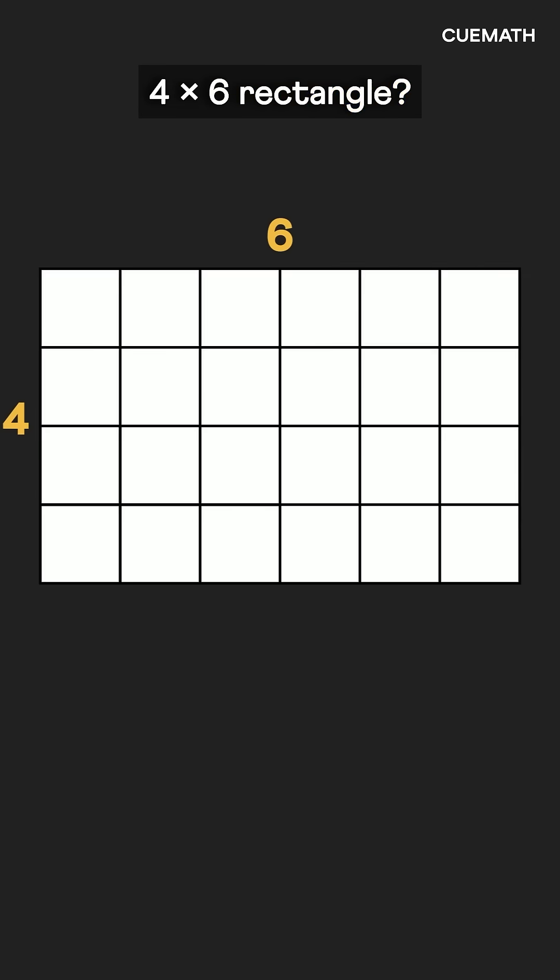What about a 4 by 6 rectangle? The diagonal crosses lines as usual, but at one point it hits a corner, meeting both lines at once. So instead of entering two new squares, it enters only one directly.